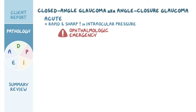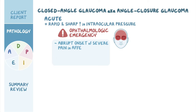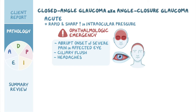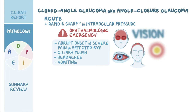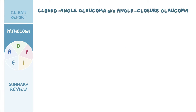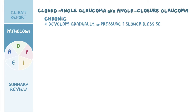Clients with acute closed angle glaucoma typically present with an abrupt onset of severe pain in the affected eye, ciliary flush or eye redness, headaches, and vomiting. Additionally, they complain of blurry vision and sometimes see colored halos when looking at a light source. In chronic closed angle glaucoma, the closure develops gradually, so the pressure increases slower and is less severe.